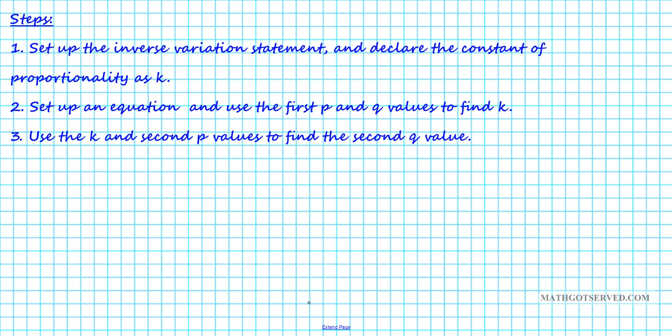So step number one, let's set up our inverse variation statement. If P varies inversely with Q, this is how you write it: P varies inversely with 1 over Q. So this shows you that as Q gets bigger, P gets smaller. As P gets smaller, Q gets bigger. That's the inverse relationship there.